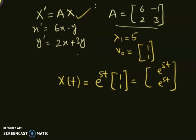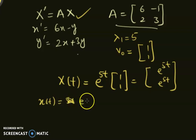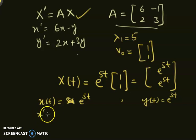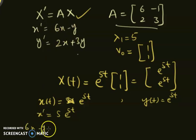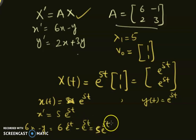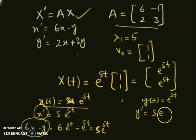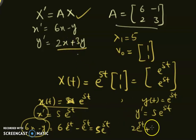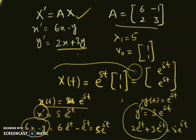Let's verify. With x(t) = e^(5t) and y(t) = e^(5t), we get x' = 5e^(5t). Computing 6x - y gives 6e^(5t) - e^(5t) = 5e^(5t), which matches. Similarly, y' = 5e^(5t), and computing 2x + 3y gives 2e^(5t) + 3e^(5t) = 5e^(5t), which also matches. So this is confirmed to be a solution.